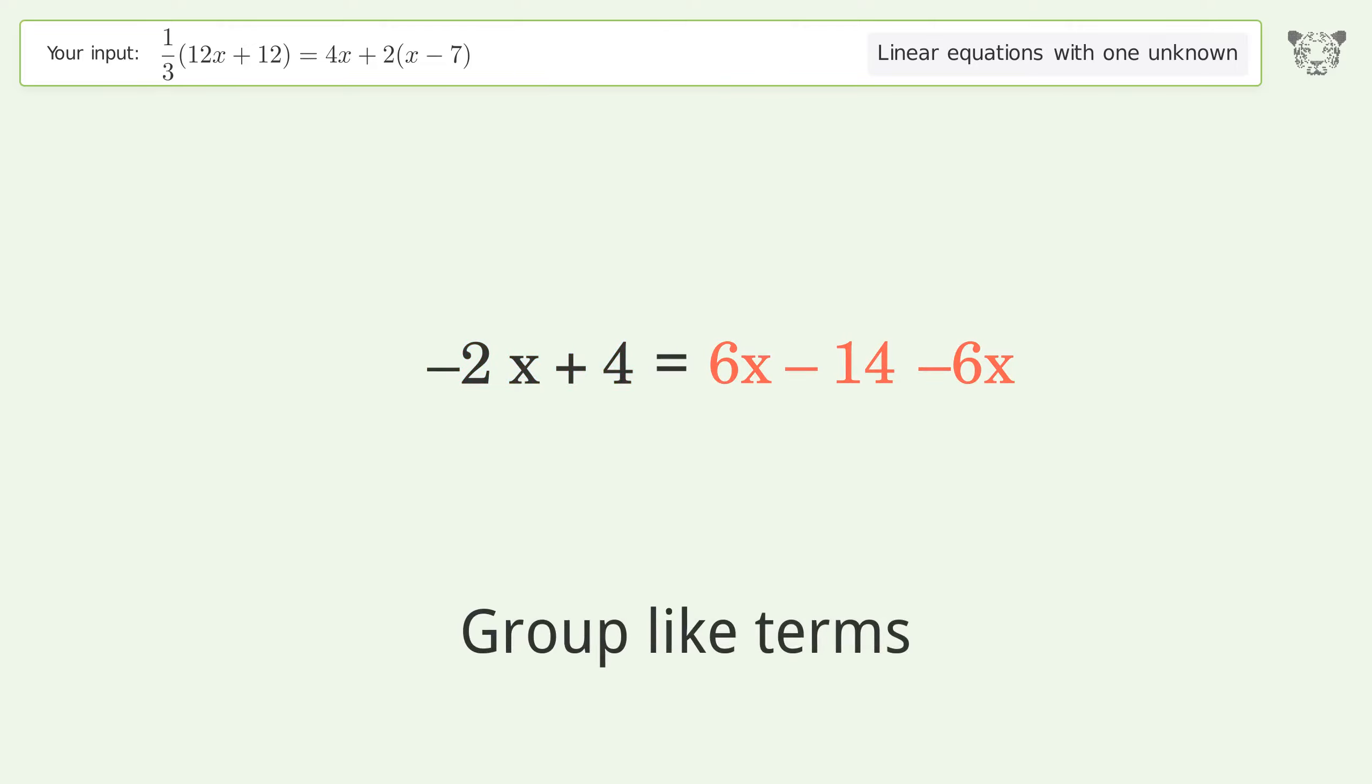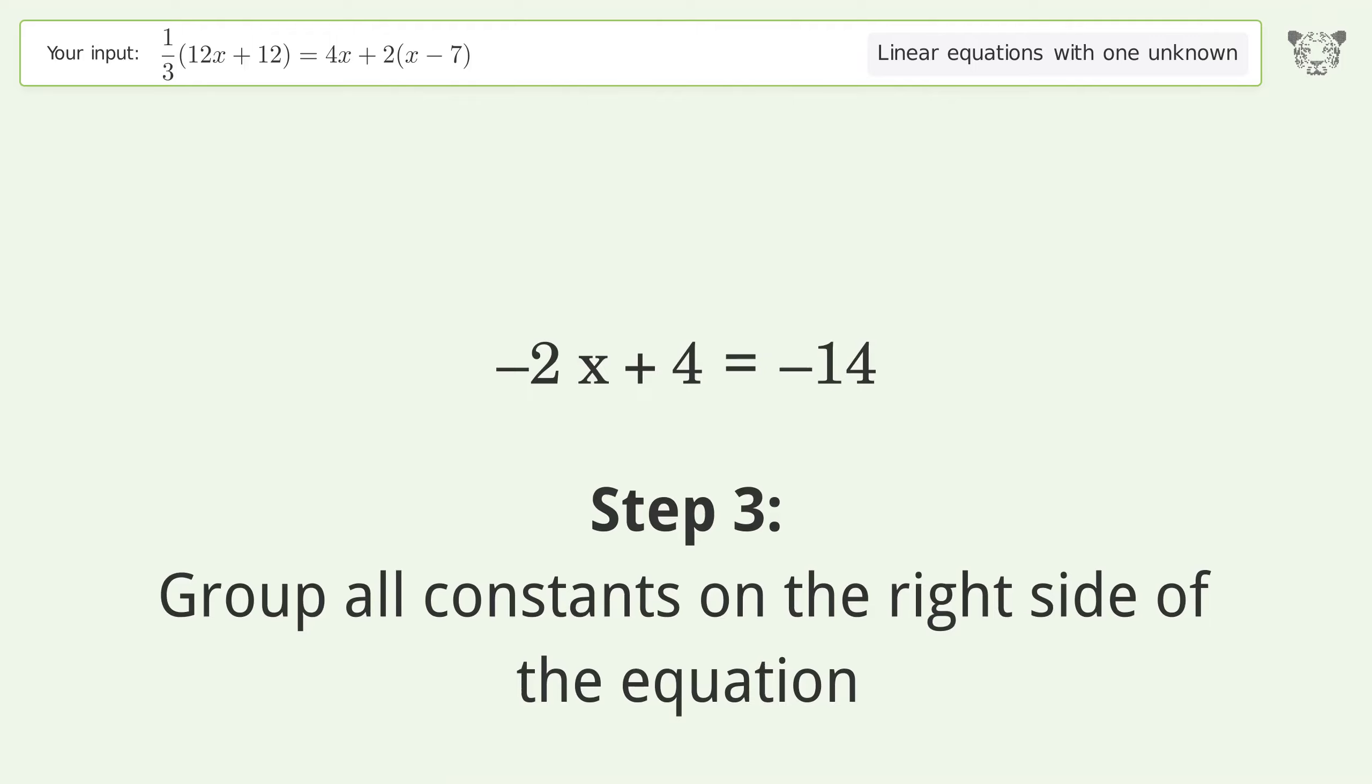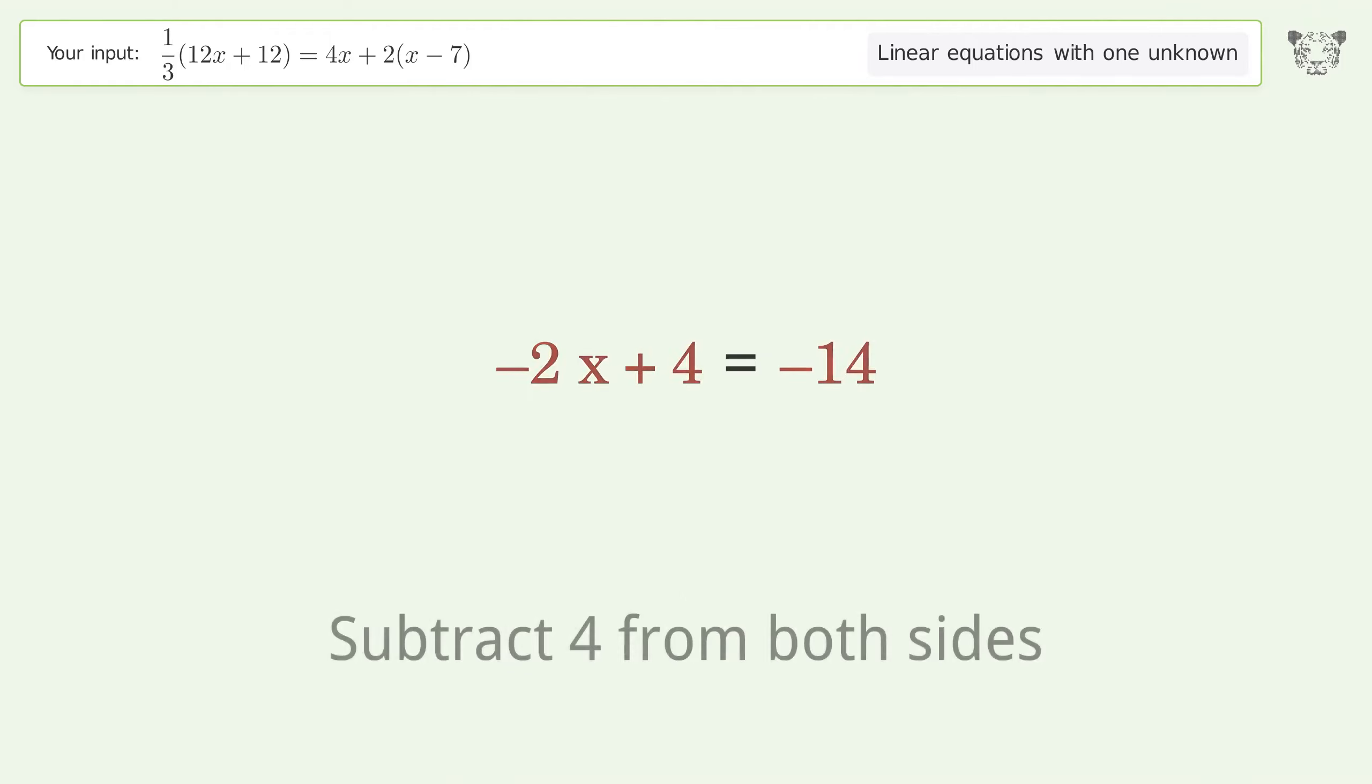Group like terms. Simplify the arithmetic. Group all constants on the right side of the equation. Subtract 4 from both sides. Simplify the arithmetic.